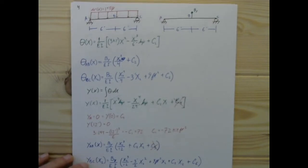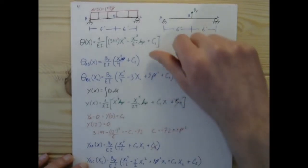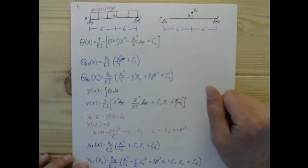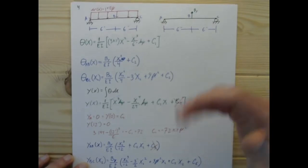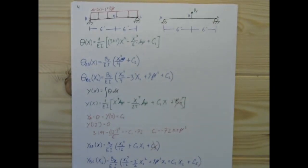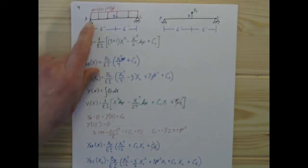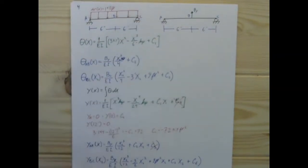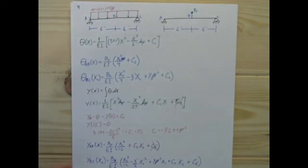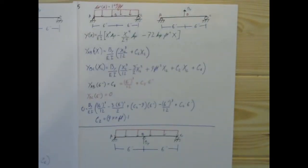Welcome to the third video accompanying the notes on solving indeterminate structures using superposition. This one will go through the rotation equations, integrating them to determine our deflection equations, and then we will be using our boundary conditions for our deflections, namely that we don't have any at A or C for either of these beams, to determine our constants of integration.